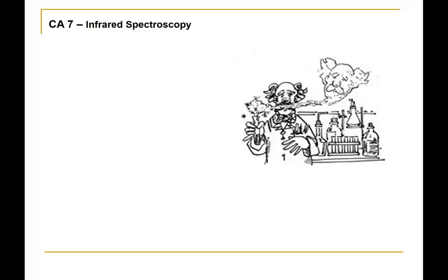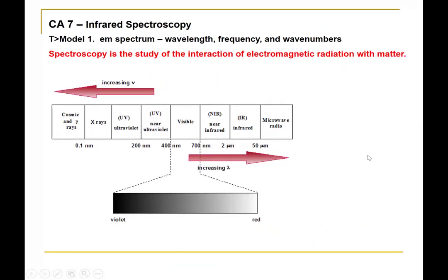Infrared spectroscopy is particularly useful to determine the functional groups that are present in a molecular structure. This technique involves the infrared portion of the electromagnetic spectrum and involves studying the interaction of electromagnetic radiation — in other words, light — with matter. By studying this interaction, it helps us understand the sorts of functional groups that are present.